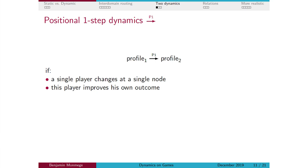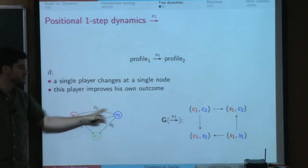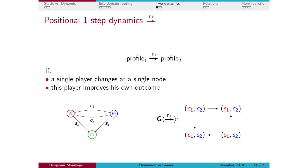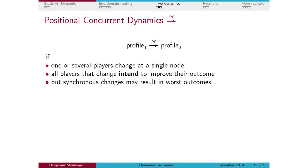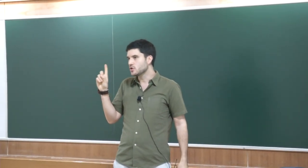The simplest dynamics is the one-step dynamics: only one player is allowed to change during one step, and moreover this player must improve his outcome — if he switches, it must be to something better. Here, from C1C2, the worst situation, player two can switch from C2 to S2, which is much better for him. The complete graph has no cycles and has two stable points, which are exactly the Nash equilibria. The concurrent dynamics — where several players can change — is what we call the concurrent semantics.